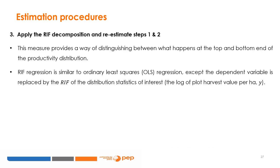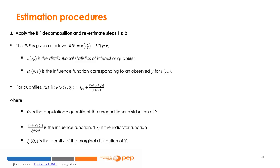For the third step, we apply the RIF decomposition and re-estimate steps one and two. This measure provides a way of distinguishing between what happens at the top and bottom end of the productivity distribution. RIF regression is like ordinary least squares (OLS) regression, except the dependent variable is replaced by the RIF of the distribution statistic of interest — the log of a plot harvest value per hectare (yield). We can now apply the RIF decomposition and re-estimate steps one and two.